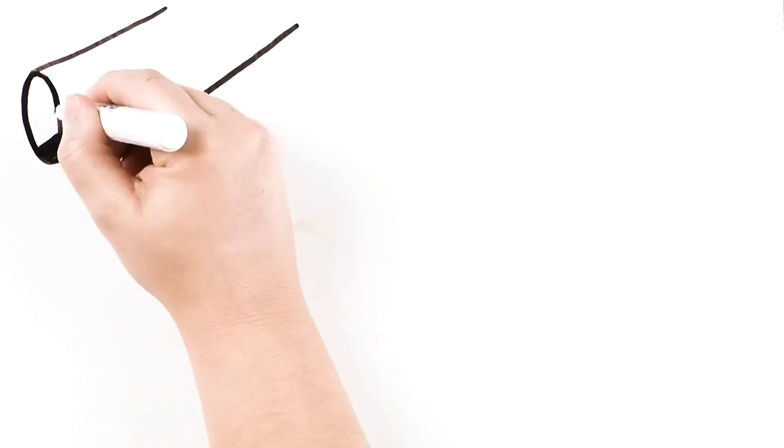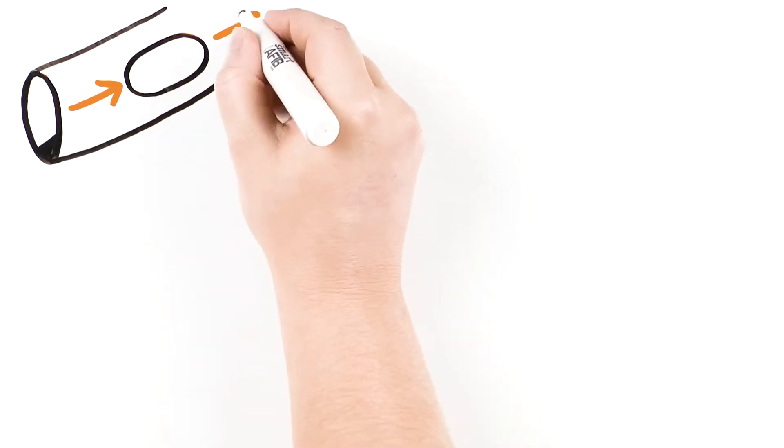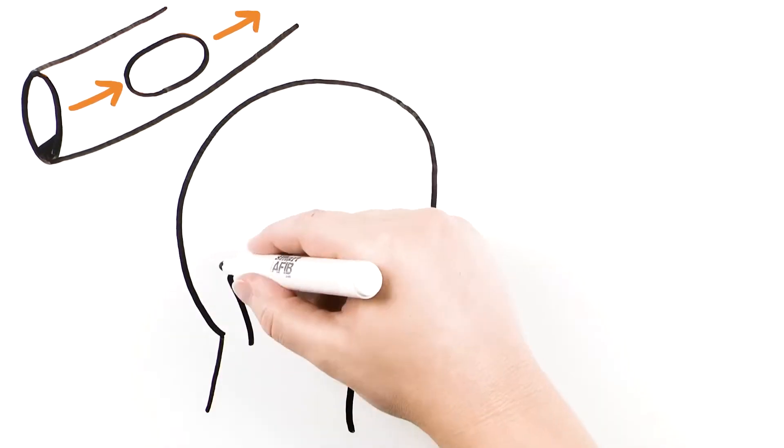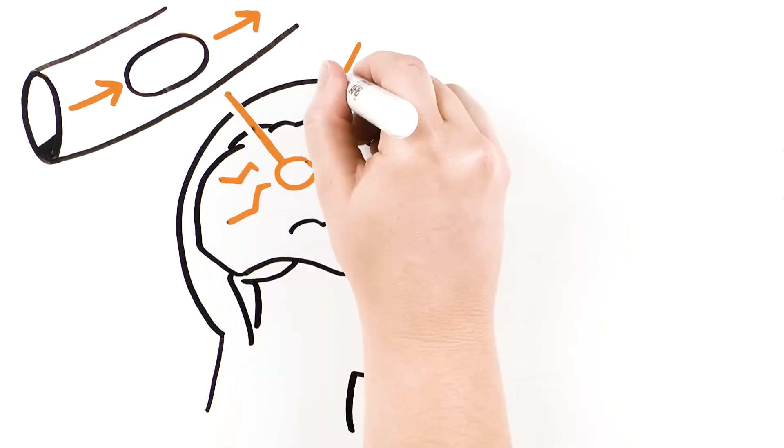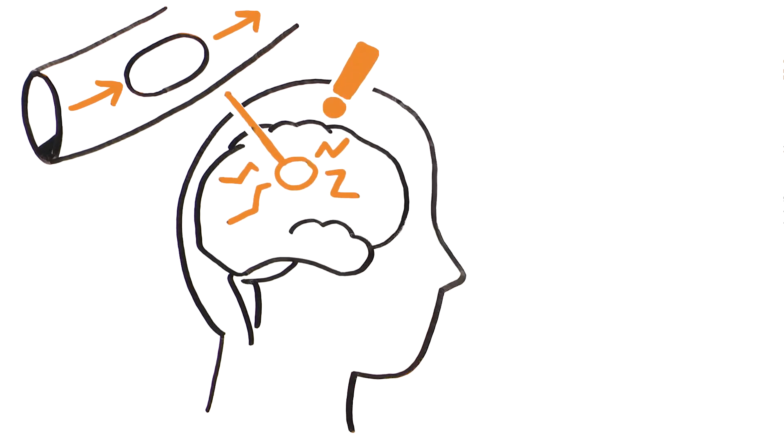Fibrillation can cause your blood to stagnate and form clots. For this reason, one of the biggest concerns for patients with atrial fibrillation is risk for stroke, as clots may reach the brain, causing a stroke.